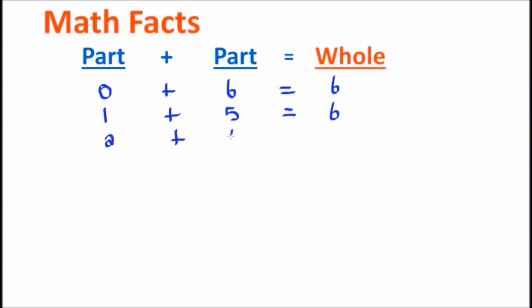2 plus 4 equals 6. 3 plus 3 equals the number 6, which is the whole. 4 plus 2 equals 6. Remember we had 2 plus 4 equals 6.